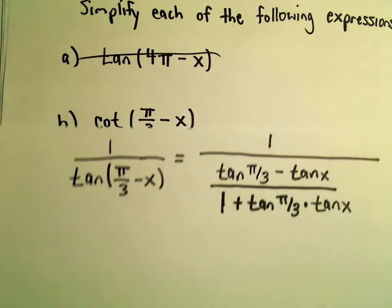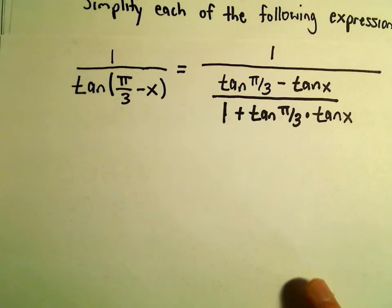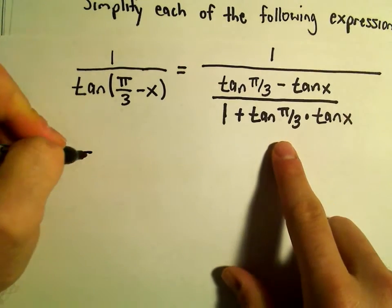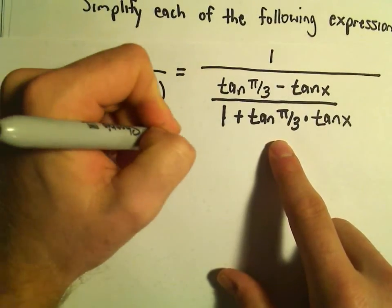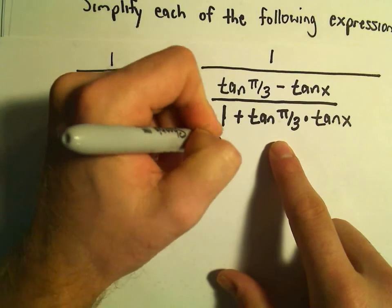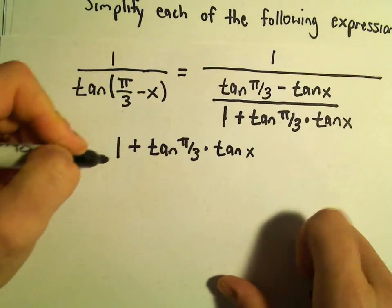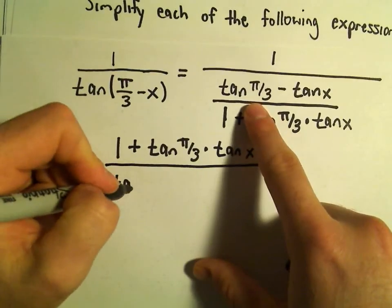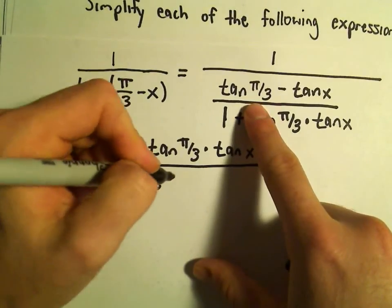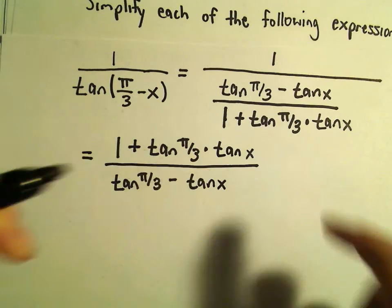If you have 1 over a fraction, that flips your fraction. So we get 1 plus tan(π/3) times tan(x) in the numerator, and tan(π/3) minus tan(x) in the denominator.